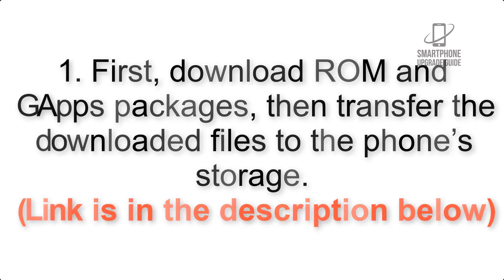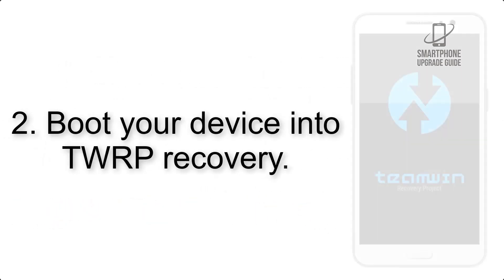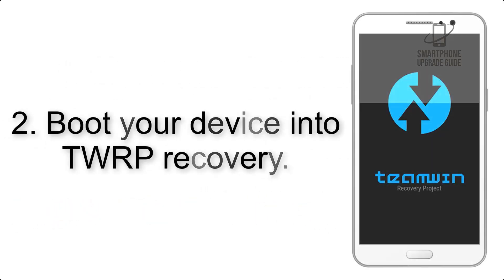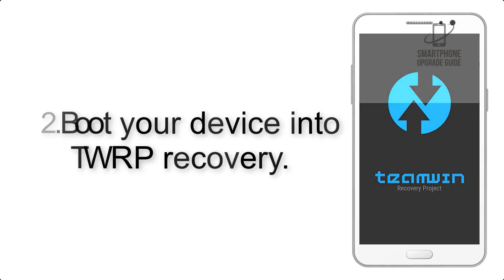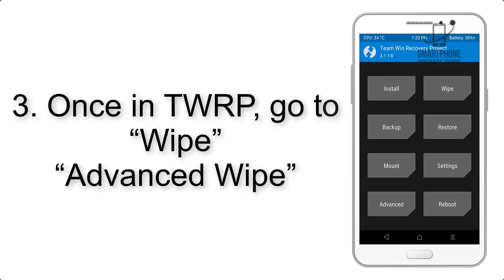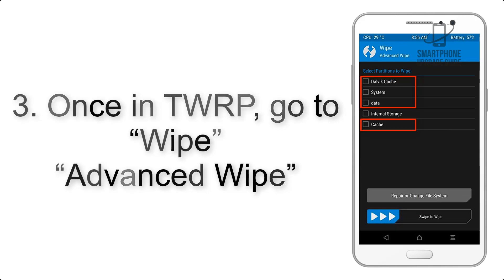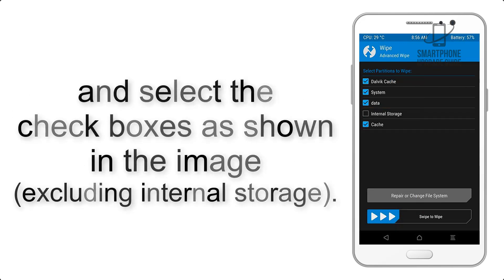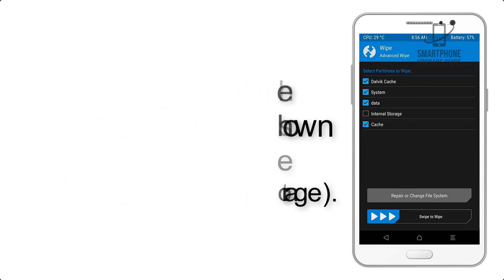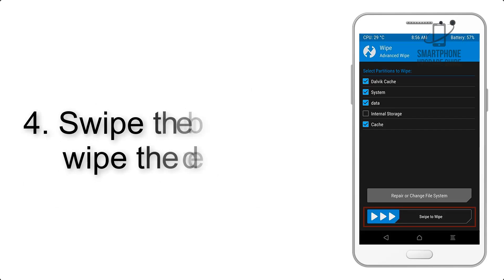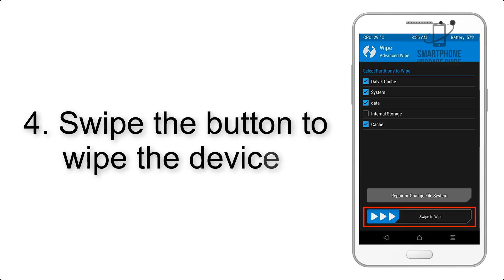Step 2: Boot your device into TWRP recovery. Once in TWRP, click on Advanced Wipe and select the checkboxes as shown in the image, excluding internal storage. Step 4: Swipe the button to wipe the device.